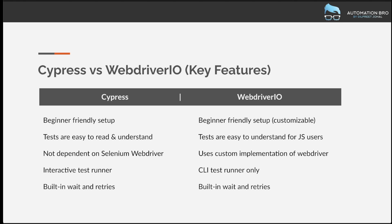The next thing is built-in wait and retries. If you're familiar with web automation, you know tests can get flaky and sometimes you just want to retry them. Both Cypress and WebDriver.io support this — they wait for elements to load in the DOM before interacting with them. And if your test fails, you have an option to retry it so you can confirm whether it's genuinely failing or just a flaky scenario.